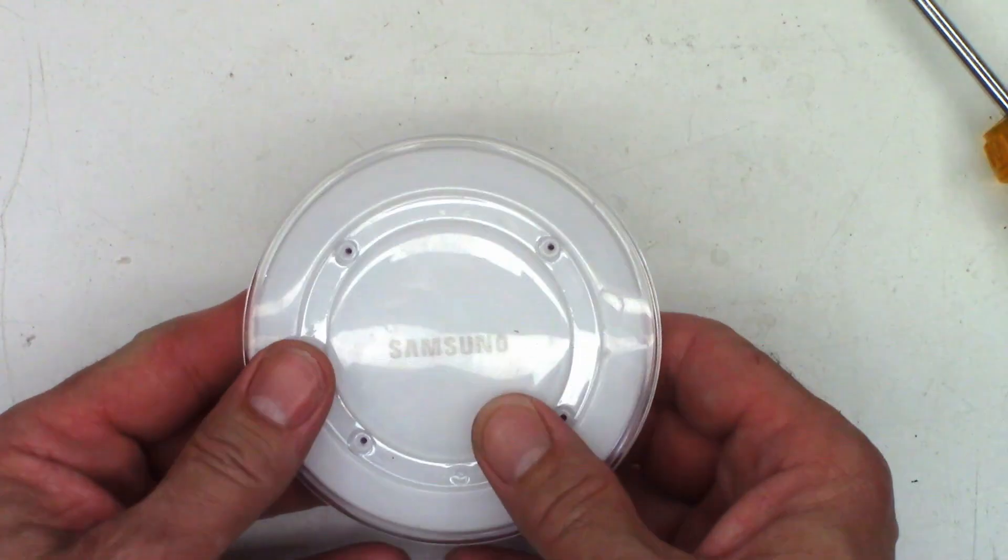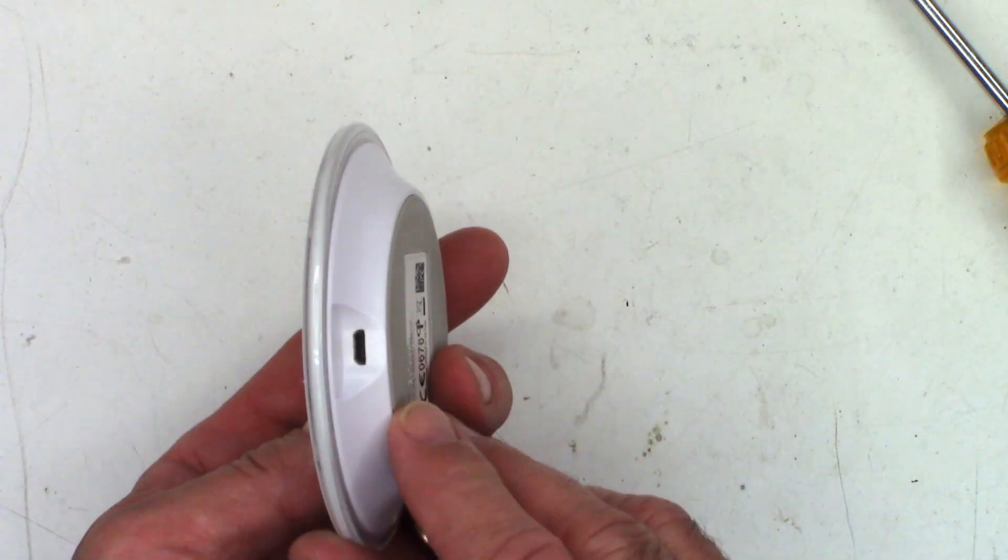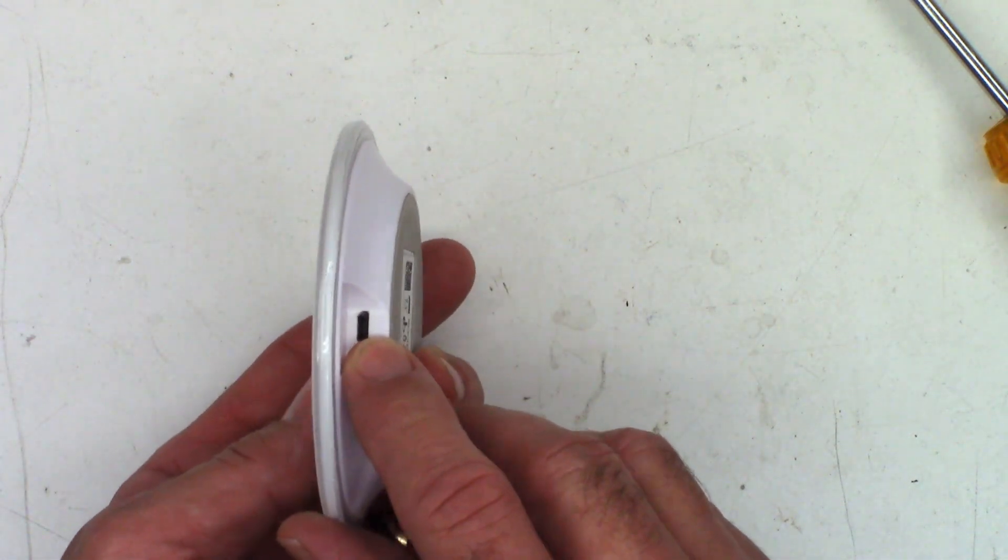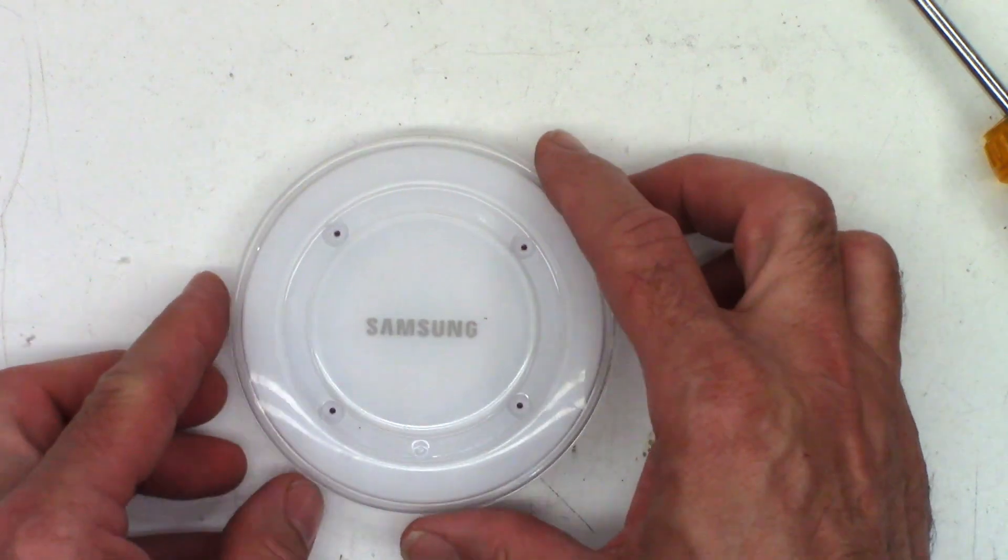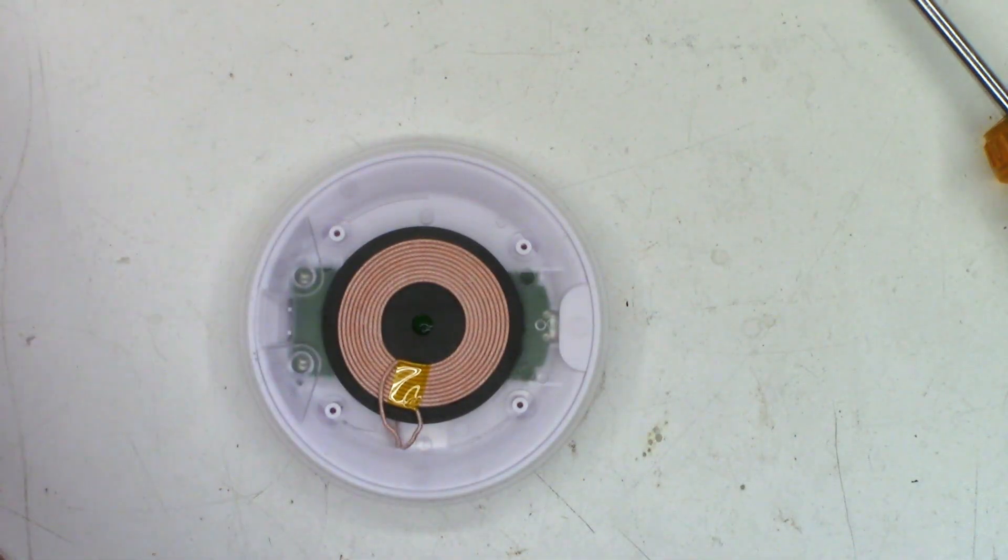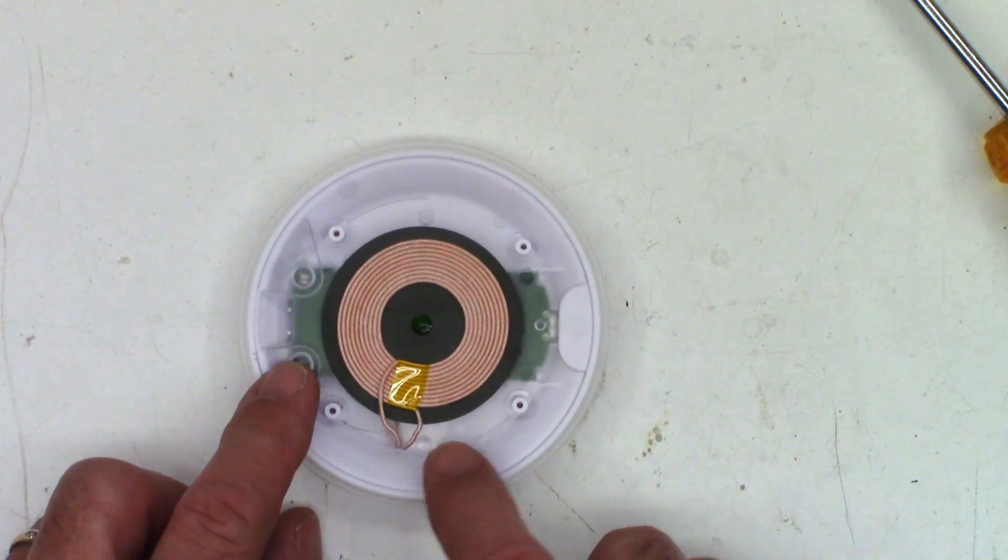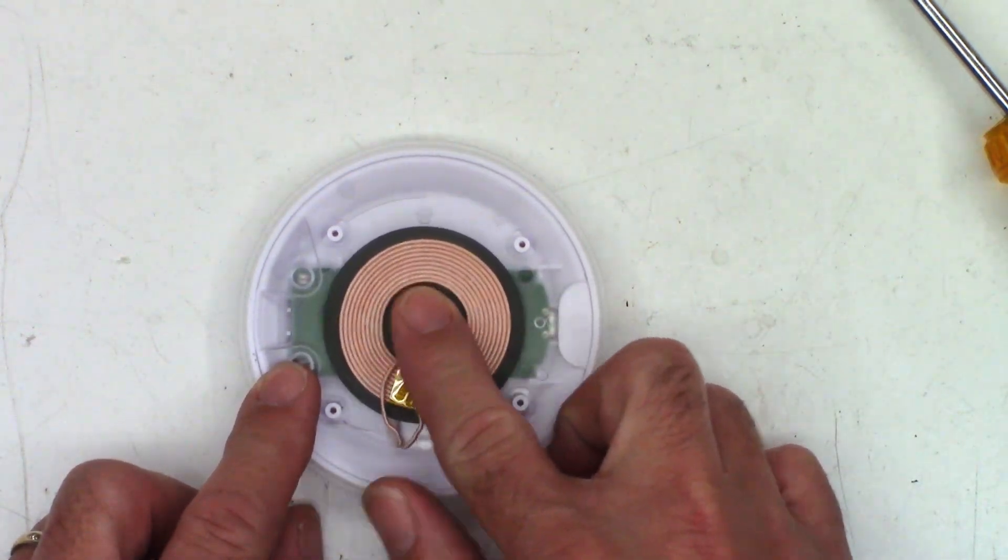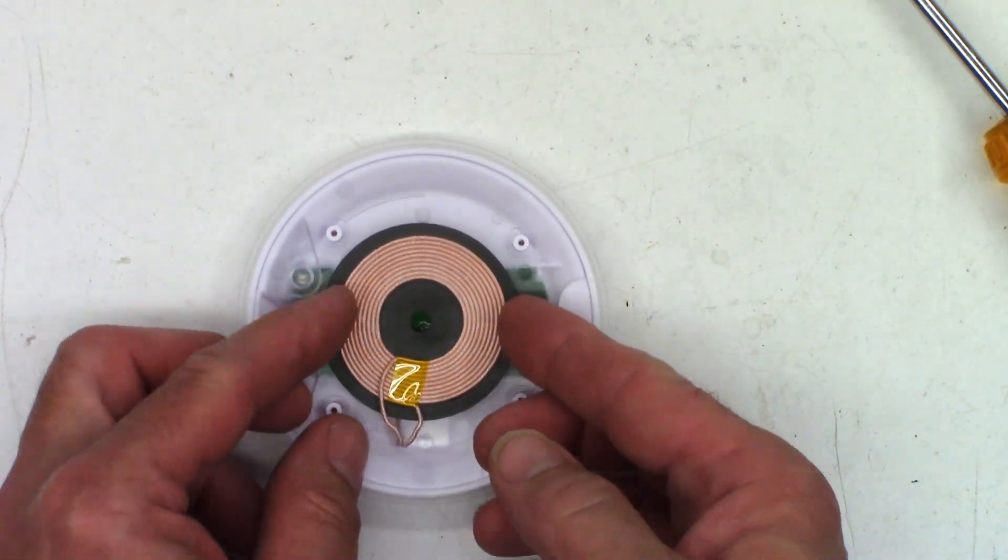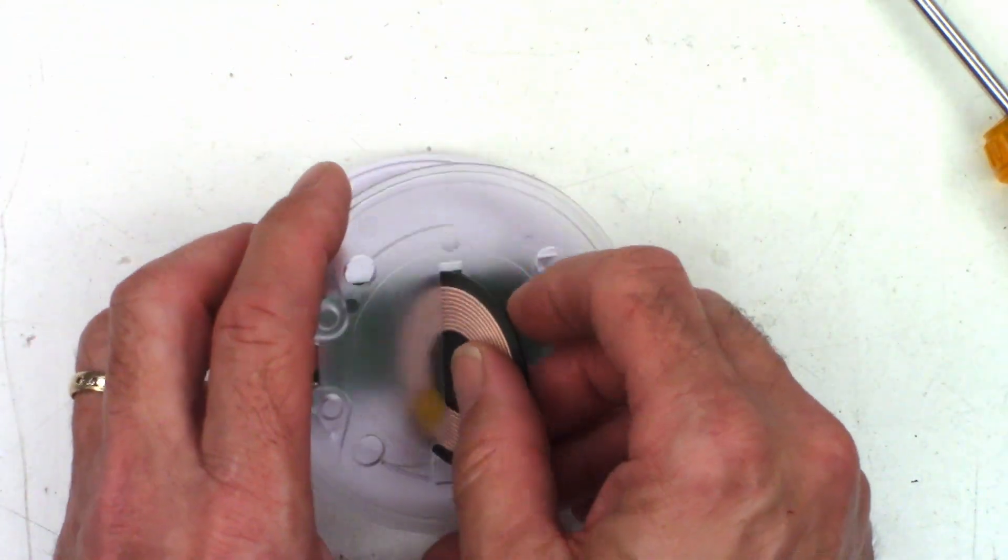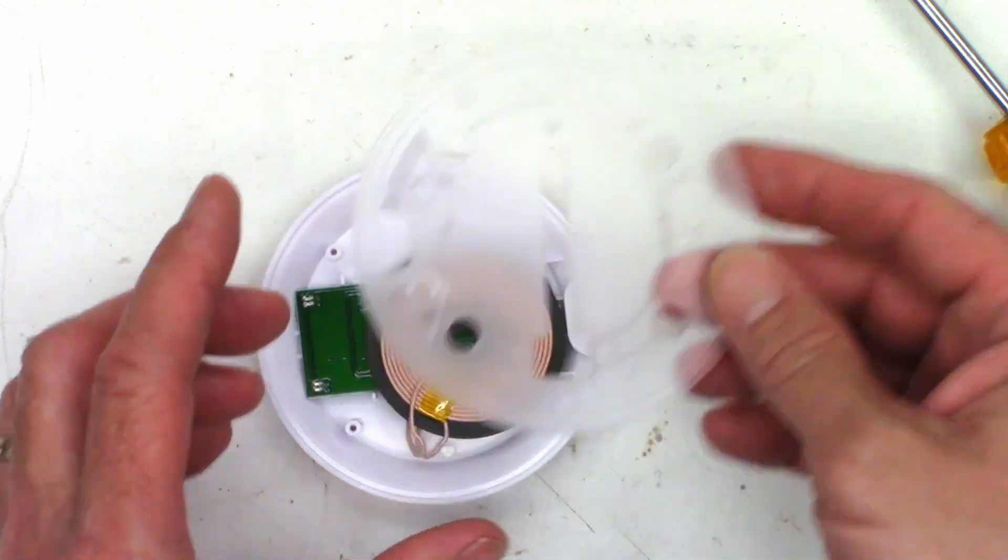Now pay attention to the orientation. The G in Samsung is closest to the micro USB jack, so the top just simply lifts off. There you can see the wireless charging coil. When you reassemble this, you want to make sure you have this in the correct orientation, because the little coil actually sets in a relief in this plastic piece. So you can actually pick this up and slide it through the middle just like that.